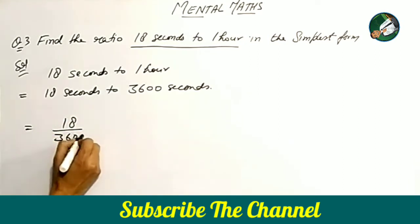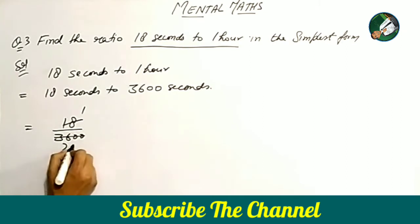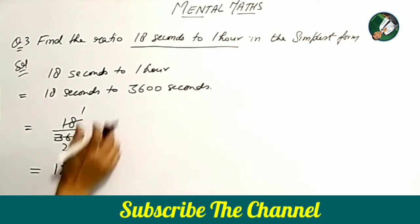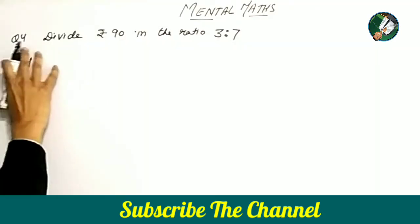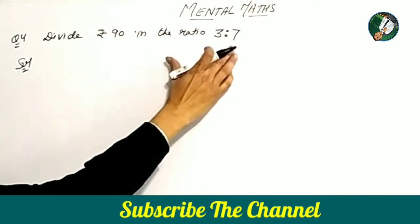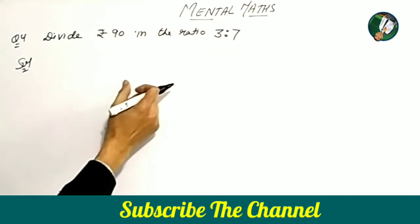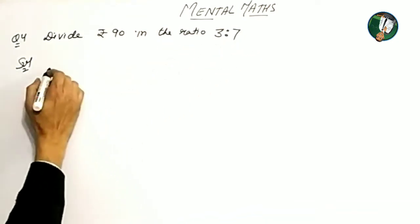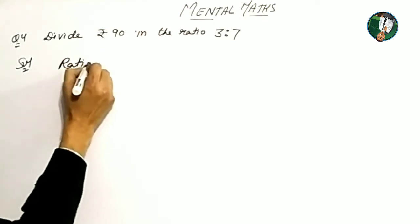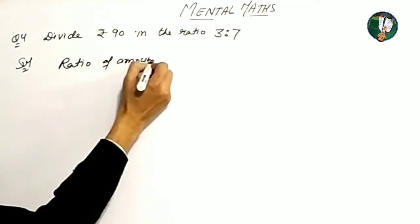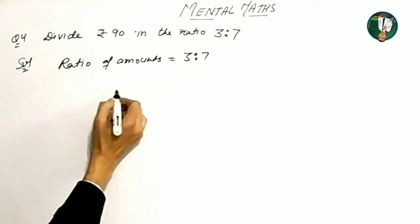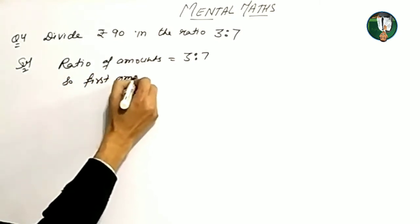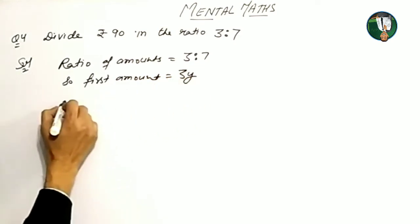Question number four: divide rupees 90 in the ratio 3 is to 7. You have to divide Rs. 90 according to the ratio 3:7. Look at the solution carefully — the ratio of amounts given is 3 is to 7. So according to the ratio, the first amount is 3y and the second amount is 7y.